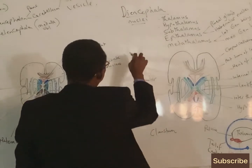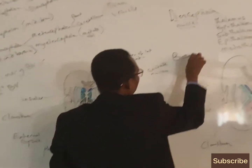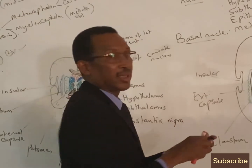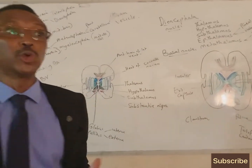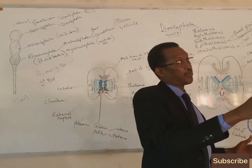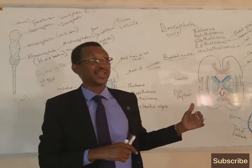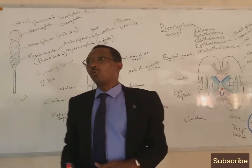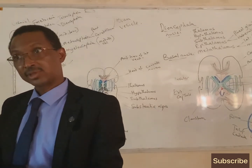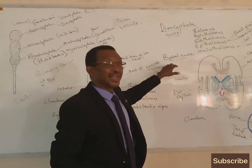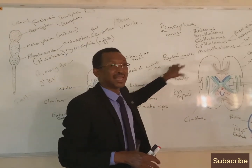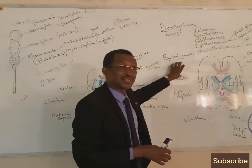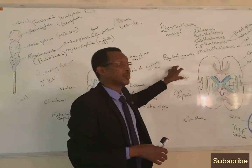Apart from the diencephalic nuclei, there are other nuclei related to them — what we call the basal ganglia, or more correctly, basal nuclei. Modern anatomists prefer the term 'nuclei' rather than 'ganglia' because ganglia refers to a conglomeration of cell bodies outside the central nervous system, while nuclei refers to a group of cell bodies inside the central nervous system. Basal ganglia is therefore a misnomer; basal nuclei is the appropriate name.